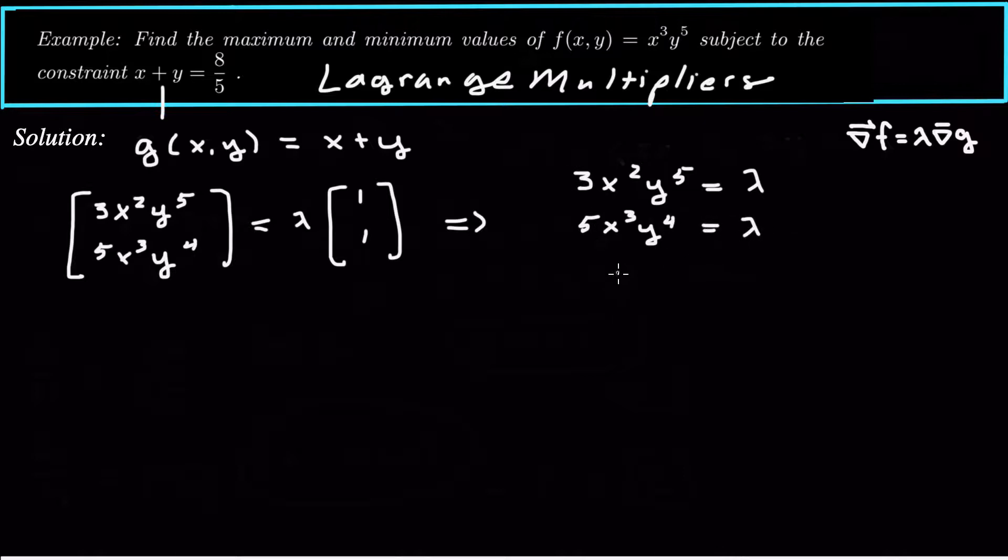And then also we have the equation x plus y equals 8 fifths. So that's our constraint equation. We always have to keep in mind the constraint equation whenever we're solving the Lagrange multipliers problem. So those are our equations.